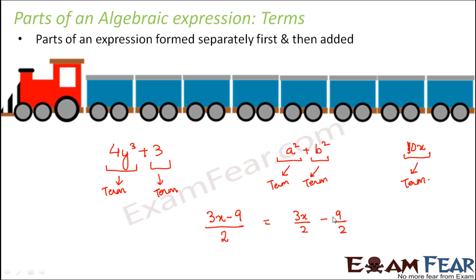Both are the same things, right? So now looking at this, you can very easily identify how many terms are there. The first term is 3x by 2, the second term is minus 9 by 2.